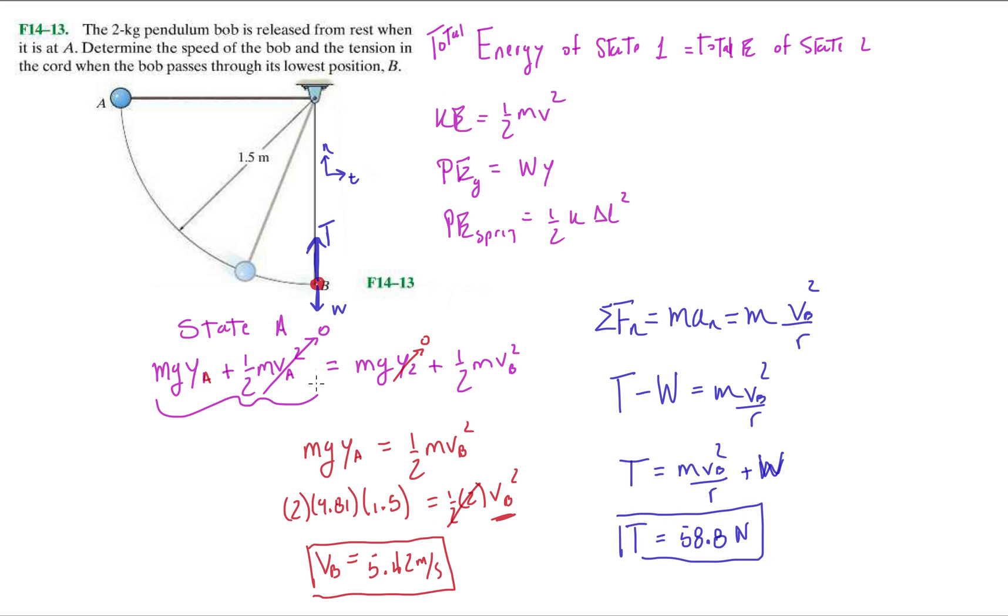All right so just doing a little recap. This part of the chapter introduces conservation of energy, meaning the sum of all the types of energy at state one has to equal the total sum of all the energy at state two.